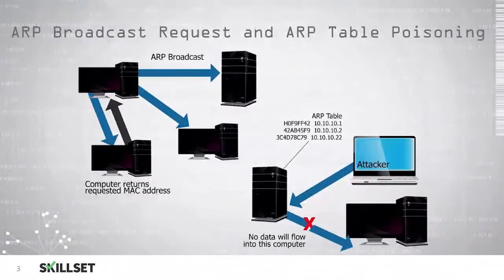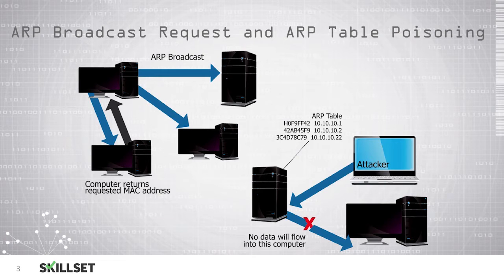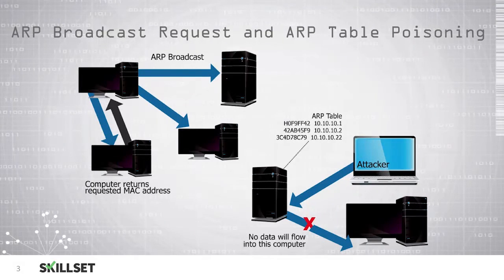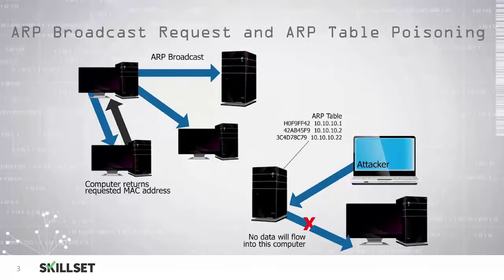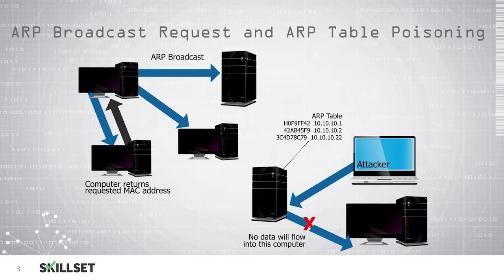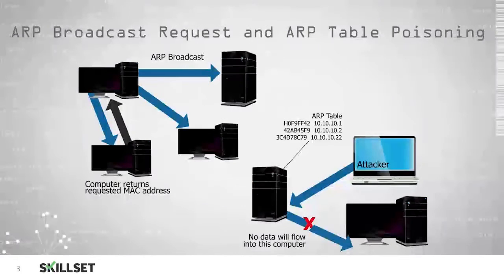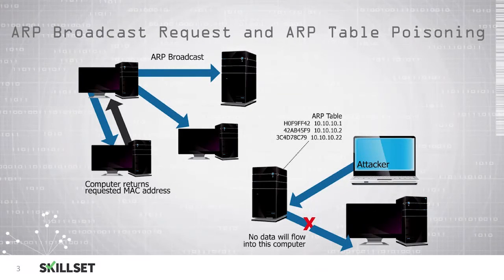On the left, we can see an ARP broadcast request. The computer is making requests on the network asking for other computers to identify themselves with the MAC address that goes with their corresponding IP address. This builds an ARP table, which is a combination of MAC addresses and IP addresses.